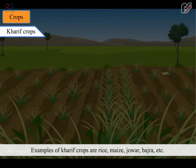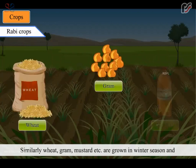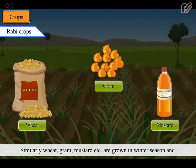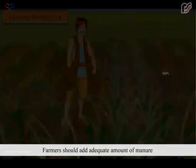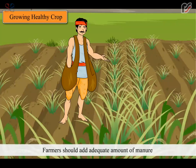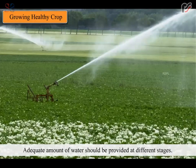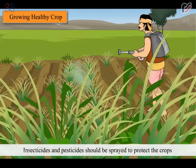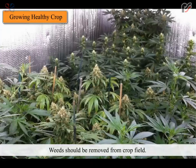Examples of kharif crops are rice, maize, jowar, bajra etc. Similarly, wheat, gram, mustard etc. are grown in winter season and are examples of rabi crops. Tips to grow healthy crops: the crop should be selected on the basis of type of soil found in that area. Farmers should add adequate amount of manure and fertilizers to the soil to make it fertile. The seeds should be of good quality. Adequate amount of water should be provided at different stages. Insecticides and pesticides should be sprayed to protect the crops from pests and diseases. Weeds should be removed from the crop field.